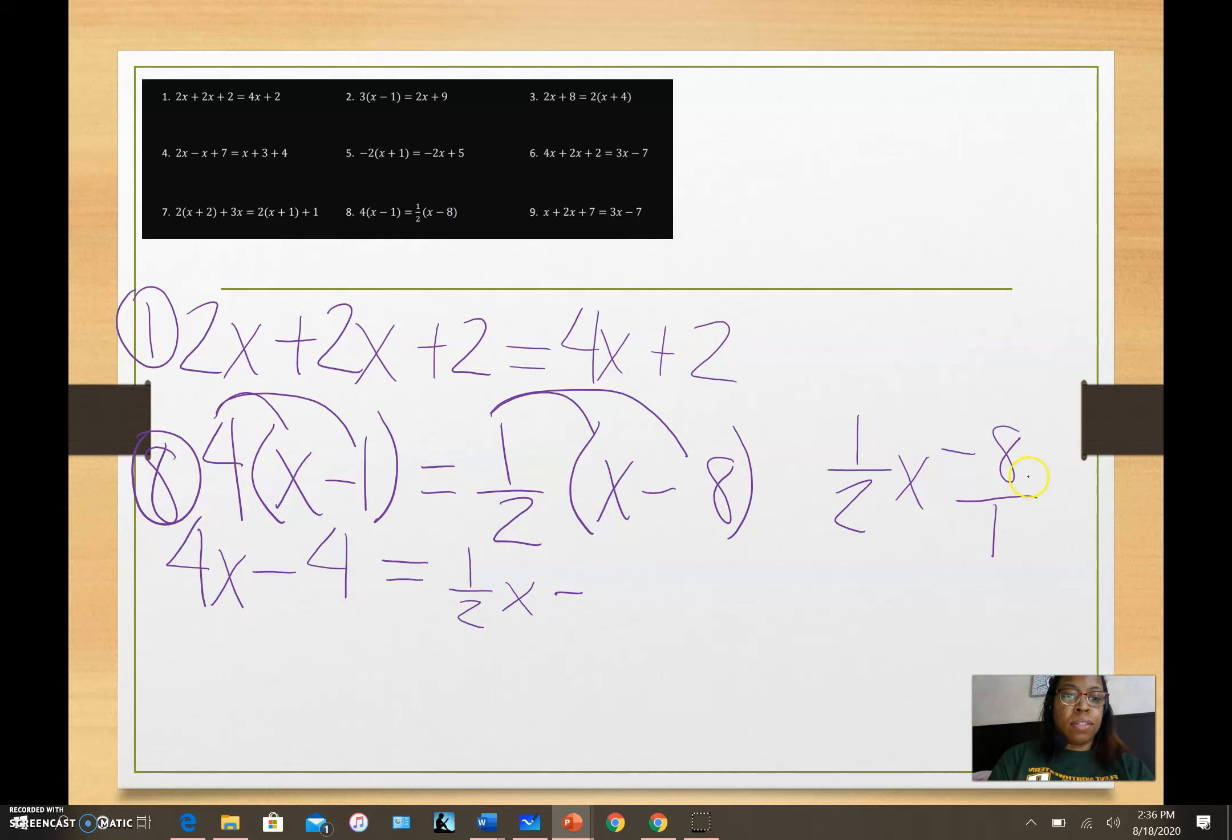Whenever you have a whole number, make sure you turn it into a fraction. Then we multiply across - multiply my numerators together. One times negative eight is negative eight, and two times one is two. I can leave it like this or remember that every fraction is a division problem. Negative eight halves is the same as negative eight divided by two, which is negative four. Now I need to do some shuffling around. I need my variables on one side of this equation, my constants on the other. I'm going to move this one half x over here.